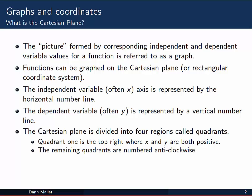The picture formed by corresponding independent and dependent variable values is referred to as its graph. Functions can be graphed on what we call a Cartesian plane, named after René Descartes, or if you like you can just call it the rectangular coordinate system.